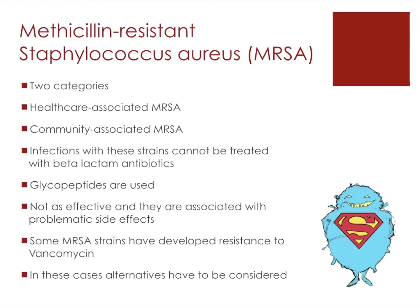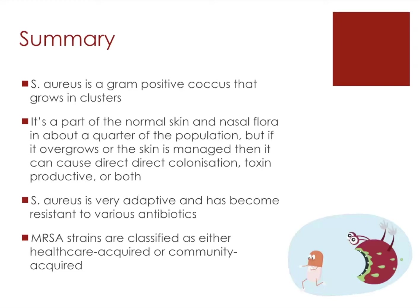In these cases, culture and sensitivity testing is essential to determine what the MRSA is sensitive to. Other options include clindamycin, tetracyclines, or tigecycline. To summarize: Staph aureus is a gram-positive coccus that grows in sticky clusters, is part of our normal skin flora, and is found in a quarter of the population. If it overgrows or the skin is damaged, it can lead to direct infection. It can also produce toxins, is highly adaptive, and has become resistant to a wide variety of antibiotics. MRSA strains are classified as either healthcare-associated or community-acquired MRSA.